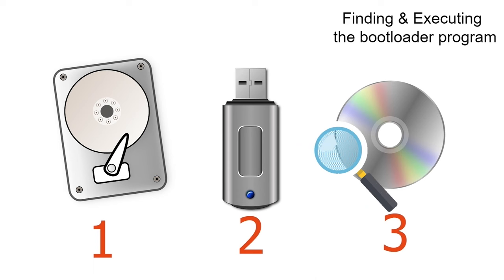With MBR, you can create a maximum of four primary partitions. If you need more partitions, you need to convert the last primary partition into an extended partition. An extended partition works like a container for logical partitions — you can create a maximum of 11 logical partitions inside it. An extended partition is not used to store data; it is used only to hold logical partitions.